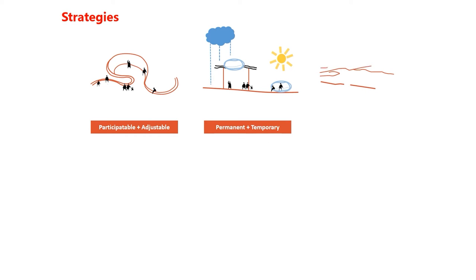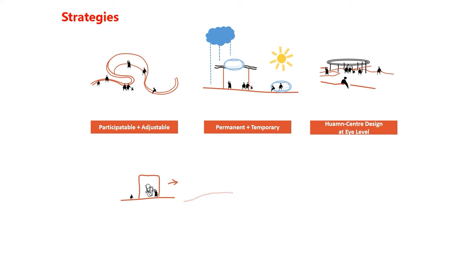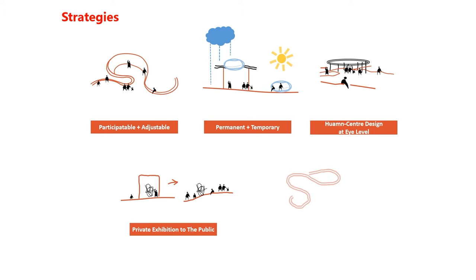Third, human-centered design at eye level: carefully design the architecture by considering revised human dimension and perspectives at eye level. Fourth, bring private exhibition to the public: bring the exhibition from the enclosed, private, and online to the open, public, and on-site. Fifth, Aboriginal naturalistic language: categorize the site with naturalistic forms and shapes derived from Aboriginal culture, in respect to the site.